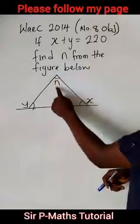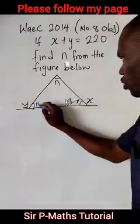You know that here is 180 minus x, angle on a straight line. Here is 180 minus y, angle on a straight line.